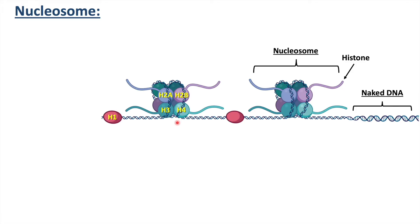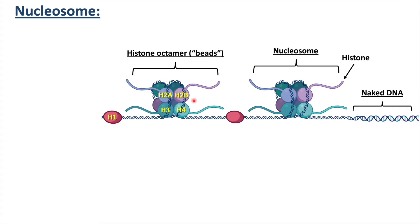Two of each histone molecule — H2A, H2B, H3, and H4 — form a histone octamer because there are eight histones. They resemble a structure similar to beads. This histone octamer is basically the structural unit of the nucleosome core, and surrounding this histone octamer the DNA molecule is wrapped around, forming a negatively supercoiled helix. So the histone octamers act like beads, and surrounding these beads the DNA molecules are wrapped around.